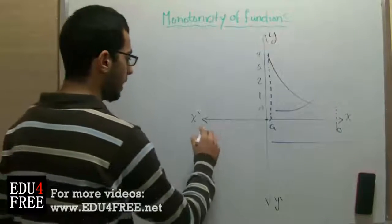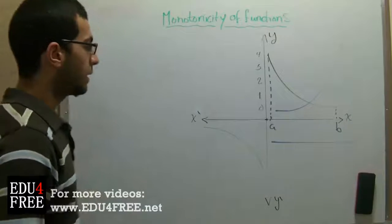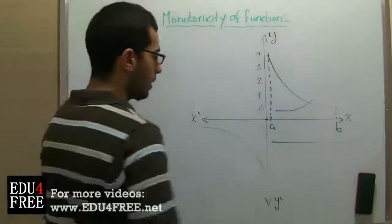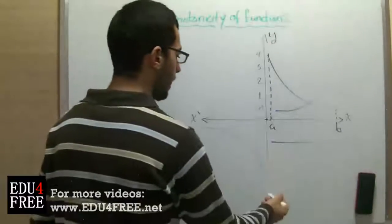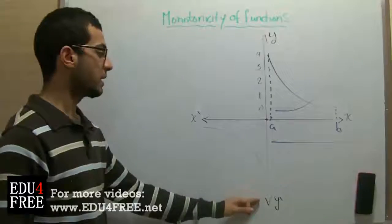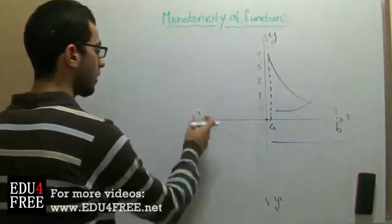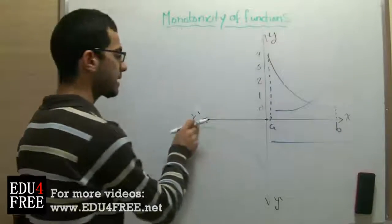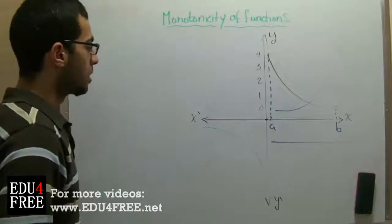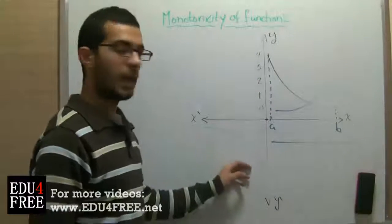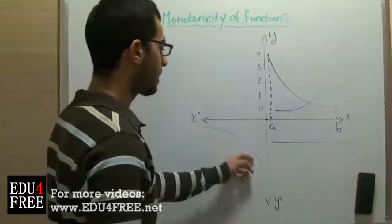Now, for a function like that — where this is the negative part of the y-axis, so as we go down the value of y decreases, and this is the negative part of the x-axis so as we go right the value increases — this will be a decreasing function.